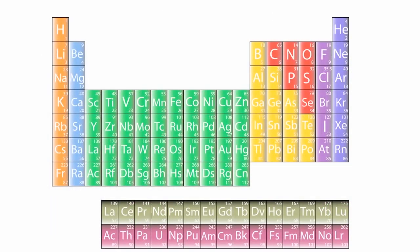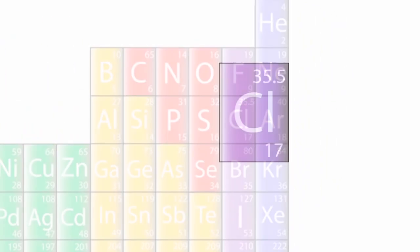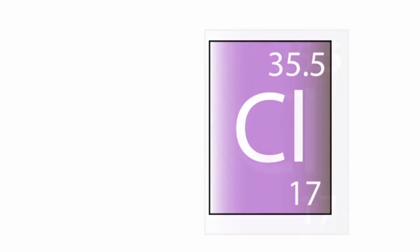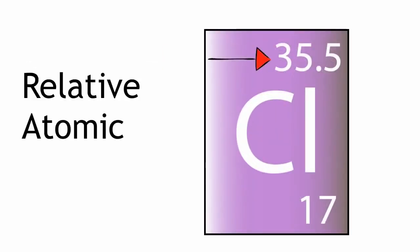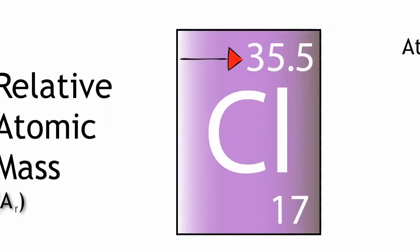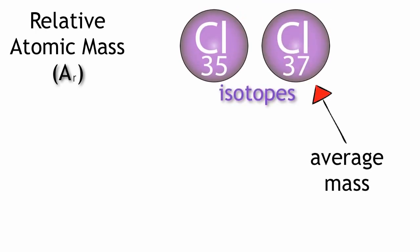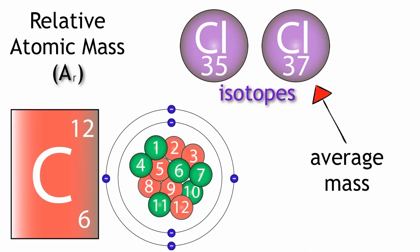The isotopic mass is not the mass number which appears on the periodic table. The number seen on the periodic table is the relative atomic mass, or the Ar. The relative atomic mass of an element is defined as the average mass of the naturally occurring isotopes of the element relative to the mass of an atom of carbon-12.